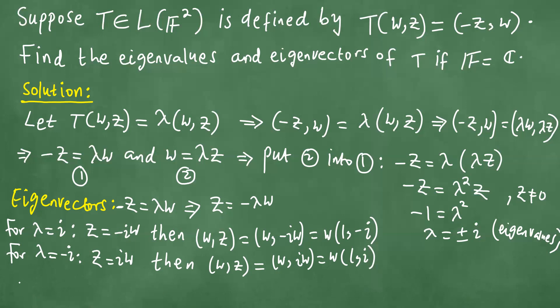The conclusion is that the eigenvectors are two: (1,-i) for λ = i, and (1,i) for λ = -i.